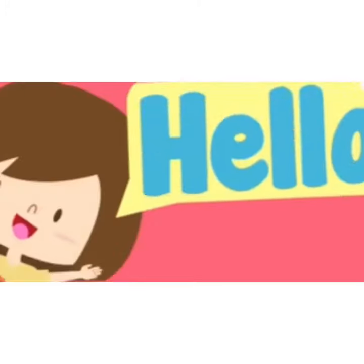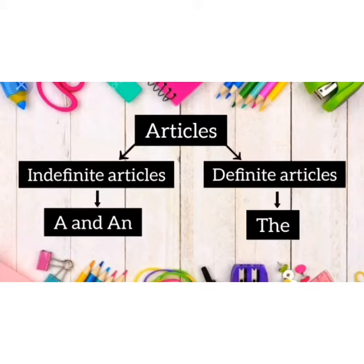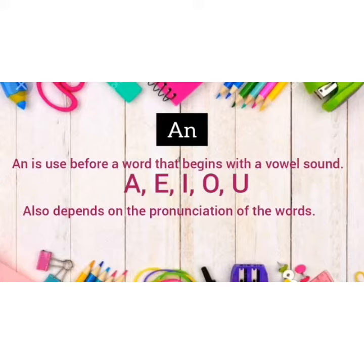Hello students, today's topic is articles. Article is of two types: indefinite article, that is 'a' and 'an', and definite article, that is 'the'. 'An' is used before a word that begins with a vowel sound: a, e...